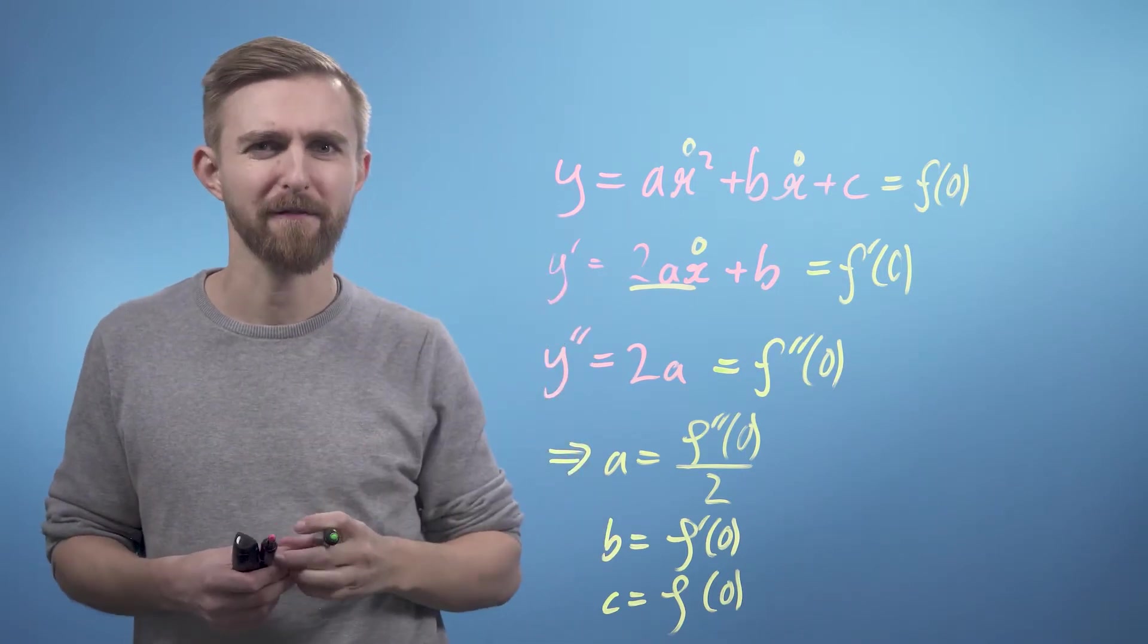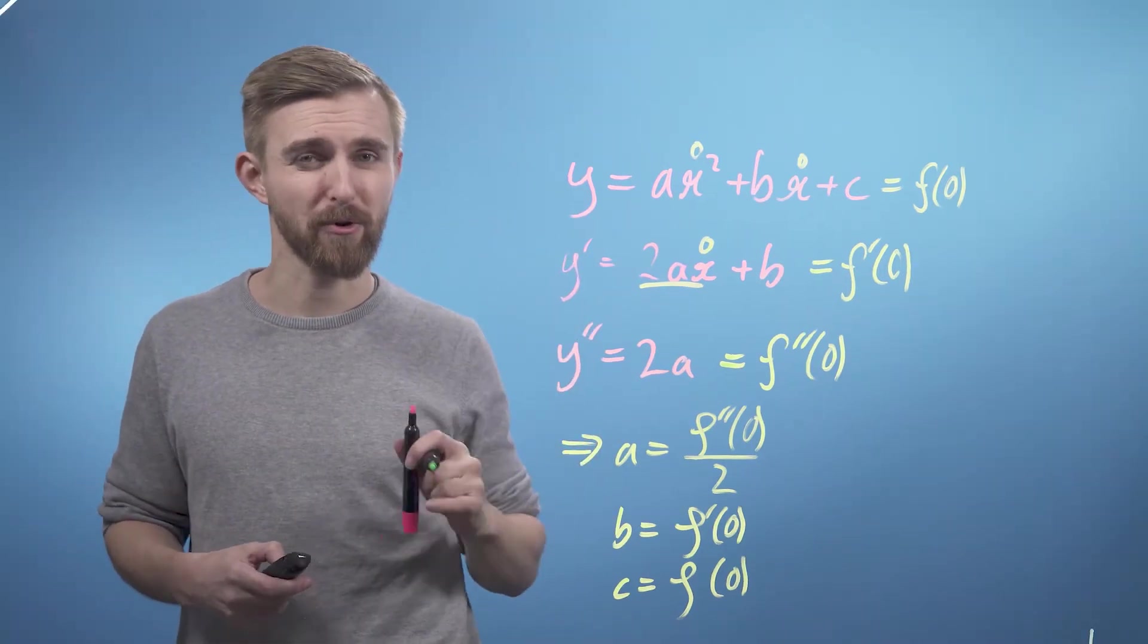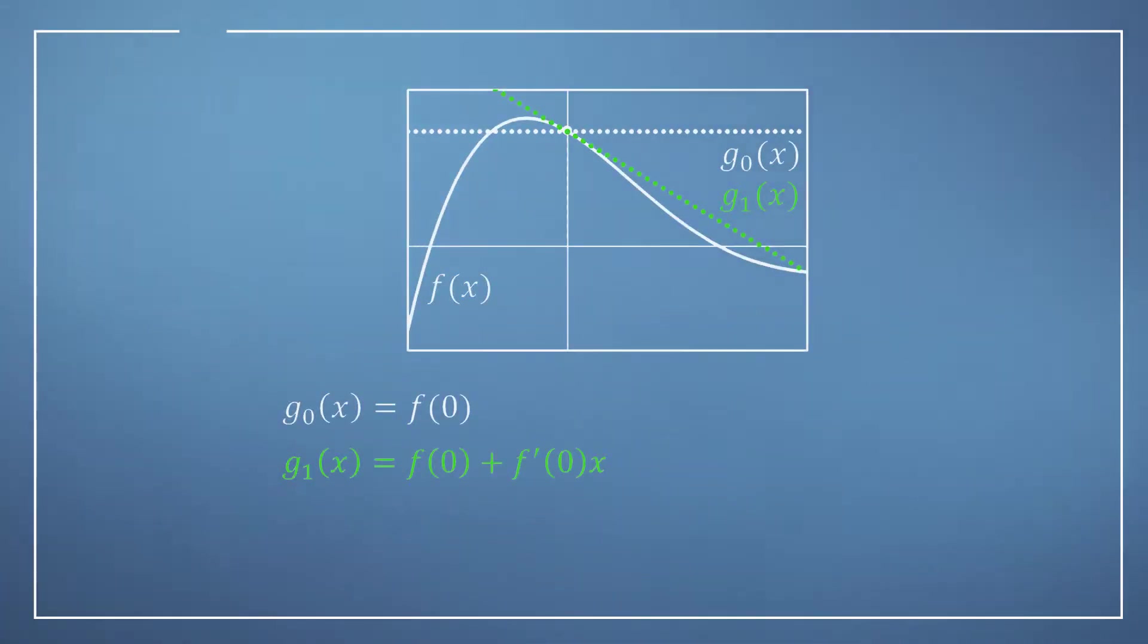So we now have all three coefficients for our equation. And we can say, let's now go back to our graph and add our second order approximation. Which, as it's just an x squared term, will be a parabola. Notice that each time we update our approximation, the region in which it matches up with f of x grows a little.